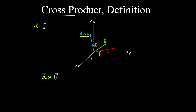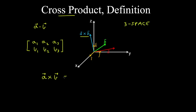To define this, we'll write the components of vectors a and b in a matrix, noting that the cross product between two vectors is only defined in 3-space. We can obtain the components of the cross product by removing one of these columns and taking the determinant of the remaining matrix.